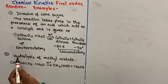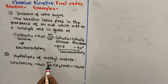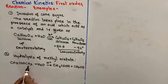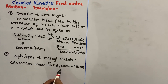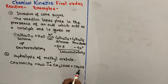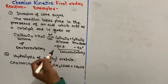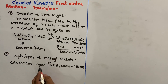Another example of first-order reaction is the hydrolysis of methyl acetate in the presence of acid. Methyl acetate gets hydrolyzed in the presence of acid to produce acetic acid and methanol. These are two examples of first-order reactions.